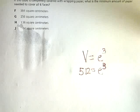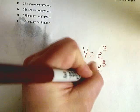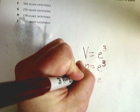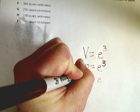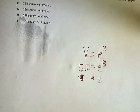512. So, we should know that e is, my pen's dying, or e is equal to 8. Because I know that 8 times 8 times 8 gives me the 512 I'm looking for.